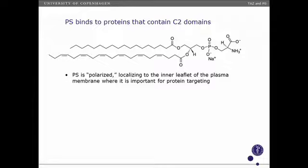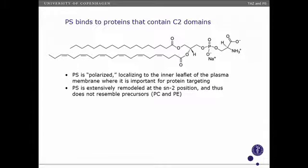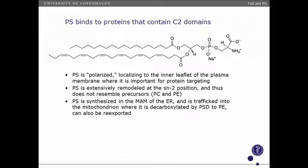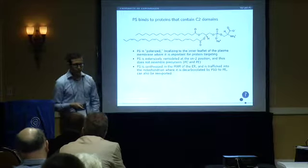PS is a very interesting molecule, and we're trying to connect the dots on how phosphatidylserine might be involved in Barth syndrome pathology. Its localization in the cell is polarized — it's found only on the inner leaflet of the plasma membrane, and it's important for protein targeting. It's extensively remodeled at the SN2 position with polyunsaturated fatty acids. Interestingly, it's generated in the mitochondrially-associated membranes, which are juxtaposed to the mitochondria. PS traffics into the mitochondria and is an important source of intra-mitochondrial PE, though the full point of PS trafficking through the mitochondria is not completely understood.